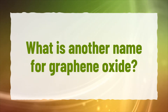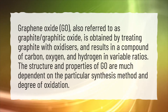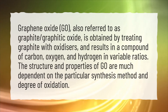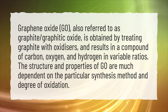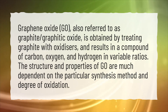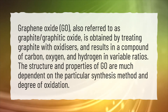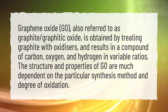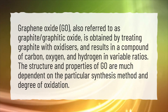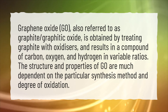What is another name for graphene oxide? Graphene oxide (GO) is also referred to as graphitic oxide, and is obtained by treating graphite with oxidizers. It results in a compound of carbon, oxygen, and hydrogen in variable ratios. The structure and properties of GO are much dependent on the particular synthesis method and degree of oxidation.